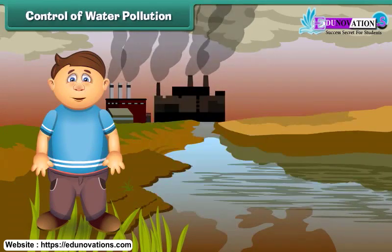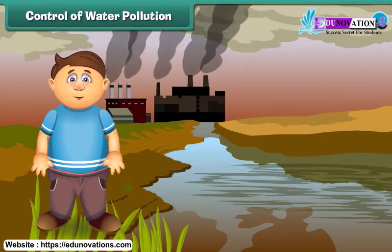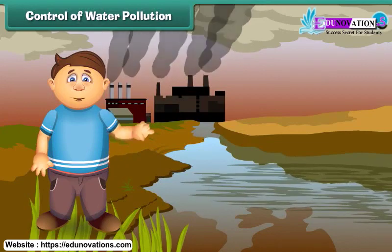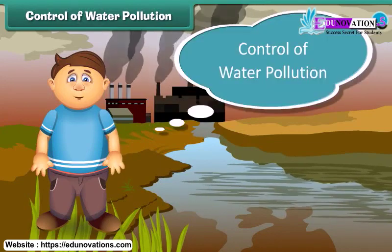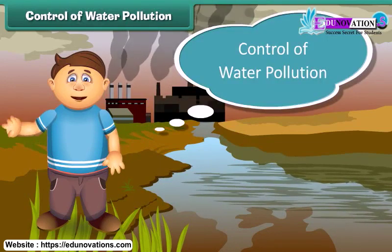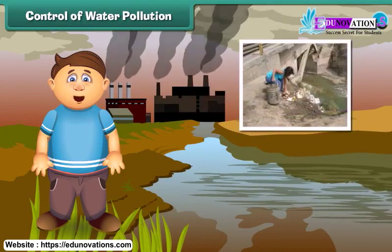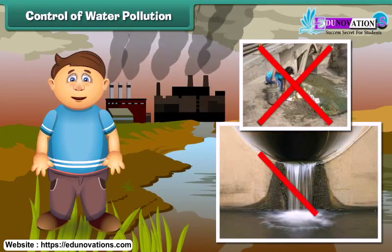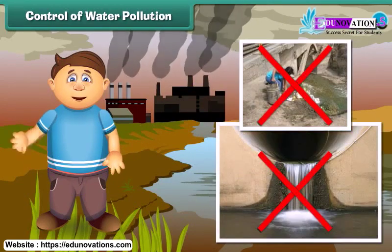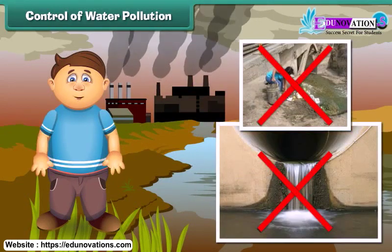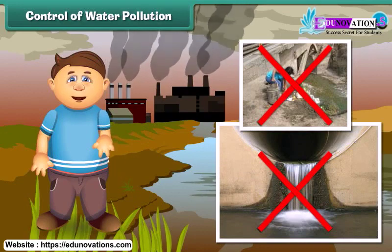Can we control water pollution? The answer is yes. To control water pollution, we should not dispose of garbage and harmful chemicals directly into ponds, lakes, and rivers.